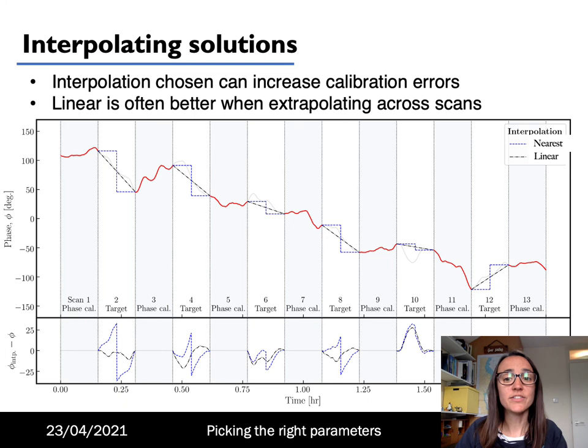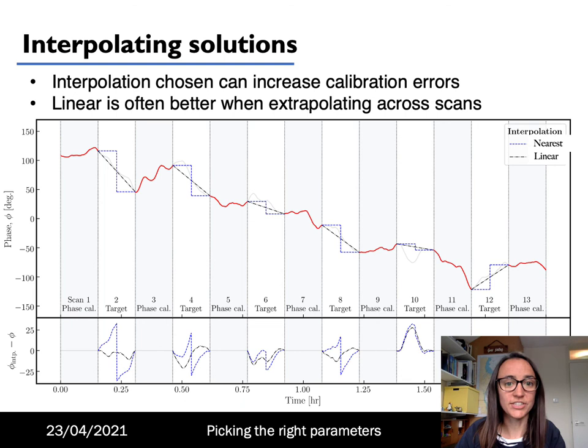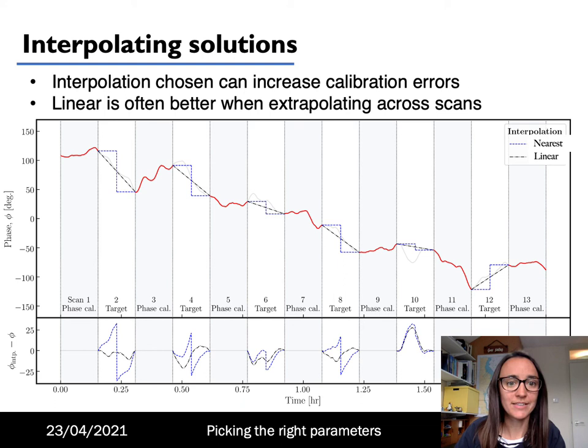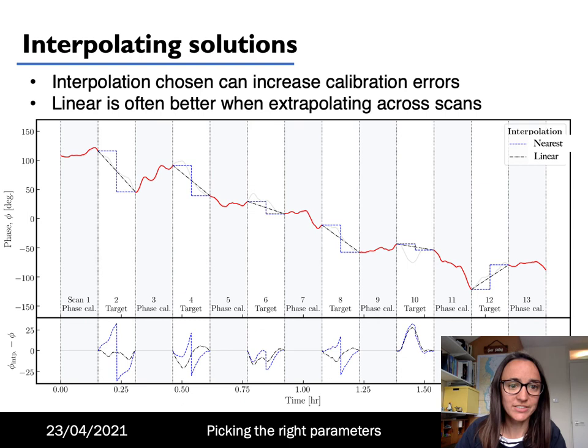We need to interpolate the amplitude and phase solutions from the phase calibrator to the target. The most common methods are either linear interpolation or nearest. This plot shows the difference between the two: nearest is shown by the blue dashed line and linear by the black dash-dot line. The bottom panel shows the difference between the interpolated phase and the true phase for these two methods. You can see that linear interpolation is often better for interpolating across scans than just using nearest.